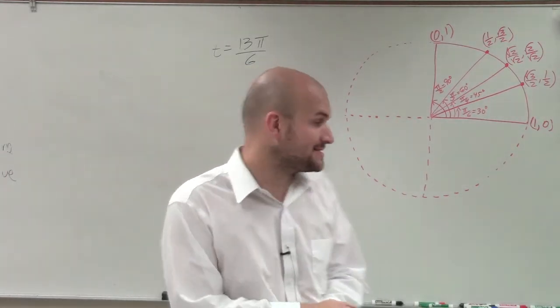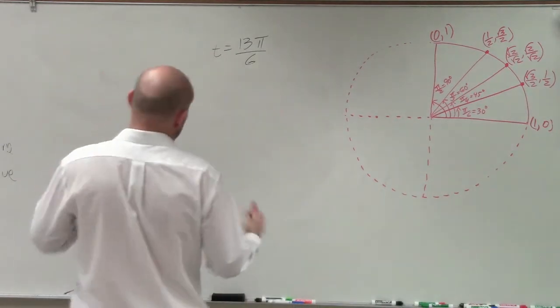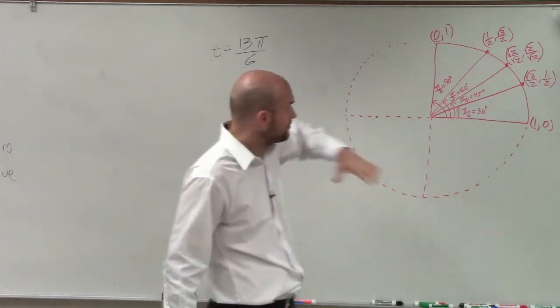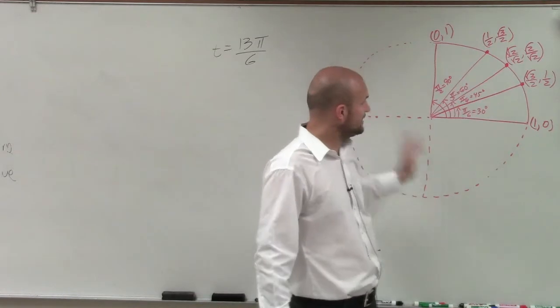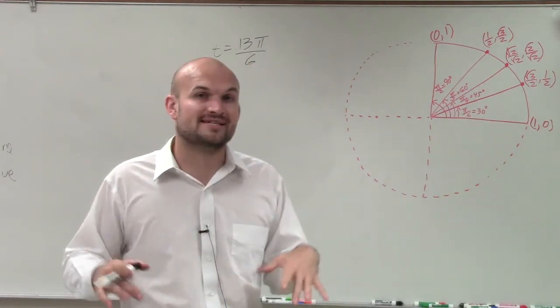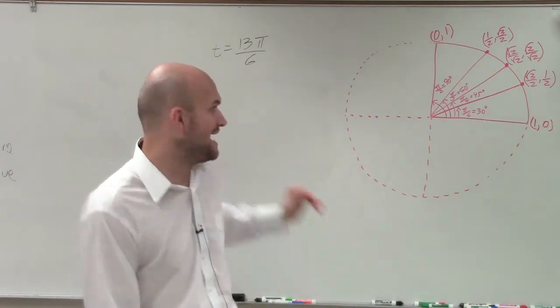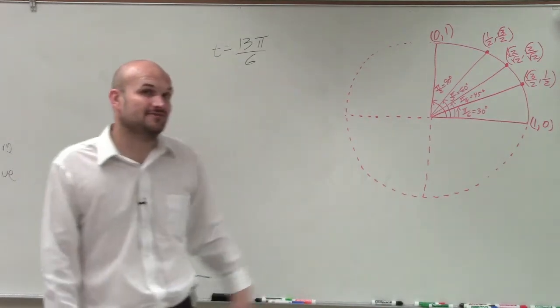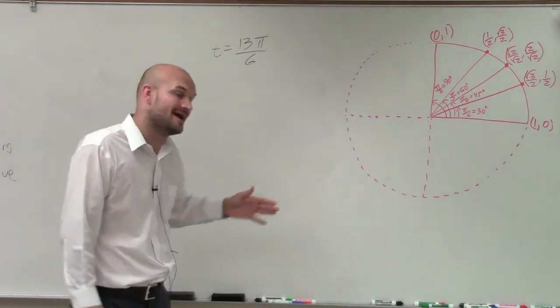And what I'm going to do for this problem is rather than sketching where 13 pi over 6 is, which you'd probably very quickly be able to determine is going to be in your first quadrant, I really want to emphasize the fact that we can always find coterminal angles. And you could probably really easily solve this problem by doing the coterminal angle in your head.